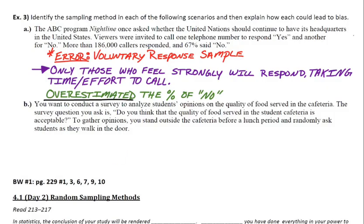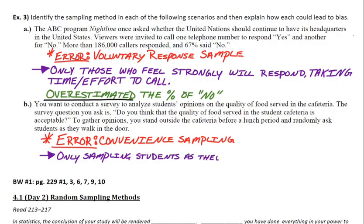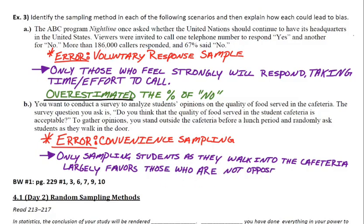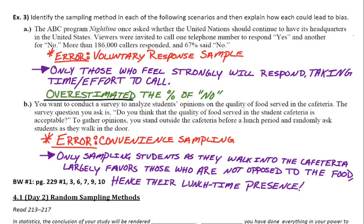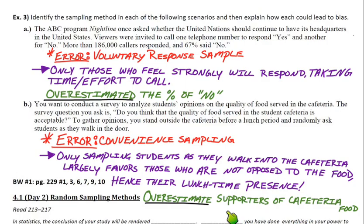So this is a clear example of the other type of error method we talked about, and that's a convenience sample. And the reason this is subject to convenience sampling is because the way the data was collected, you're only sampling students as they walk into the cafeteria. So that largely favors those who are not necessarily opposed to the food, which is why they're walking into the cafeteria at lunchtime. Not to mention, they're probably hungry in the moment you ask them. So for that reason, the bias in this case seems like the survey would consistently overestimate the supporters of the cafeteria food.